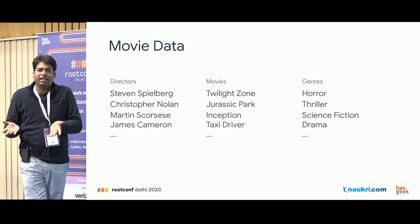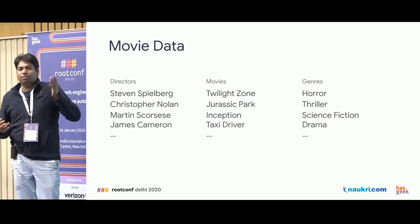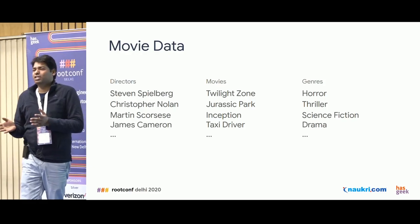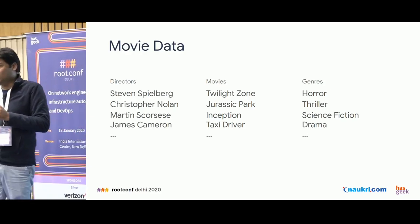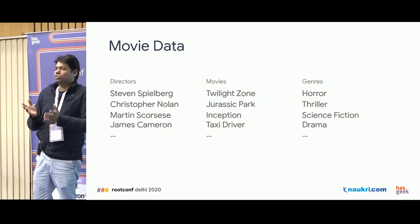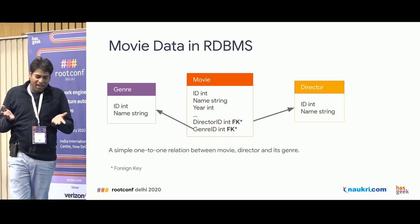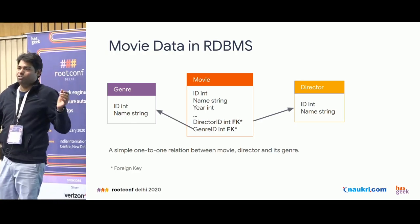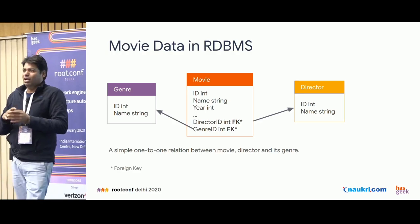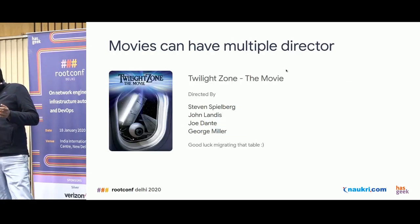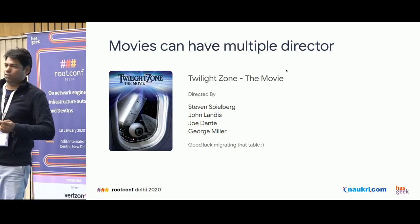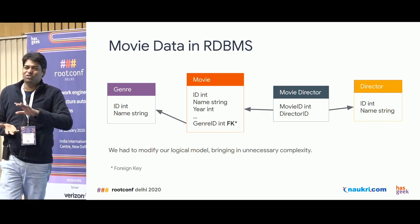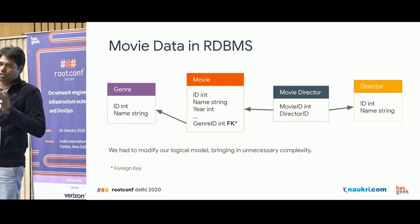Let's take some specific data. Suppose we have movie data: a list of movies, directors, and genres. We will try to create a schema, put this data into RDBMS and NoSQL, and see what challenges we find. Your first approach would be to create a movie table, put director and genre into two separate tables, and link them with foreign keys. But then you realize a single movie can have multiple directors, and you need to migrate the movie table and introduce another table to keep that relationship.